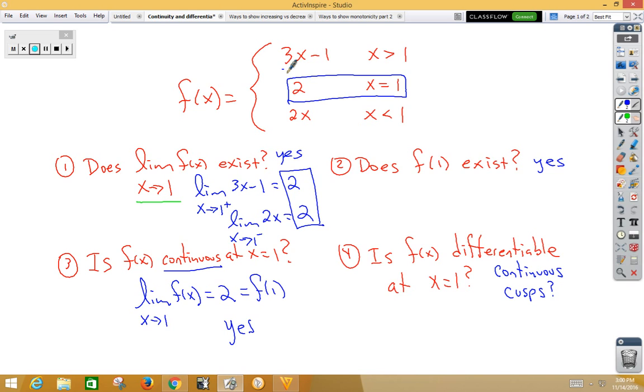The top function has a slope of 3. The bottom function has a slope of 2. If you start with a slope of 2 and then you go to a slope of 3, that's going to create a sharp corner, which is a cusp, which is a point of non-differentiability, so the answer to that would be no.